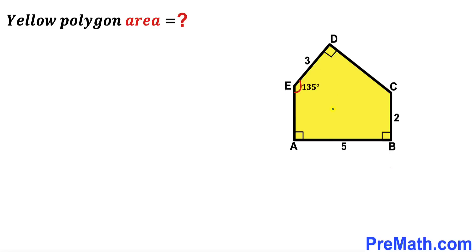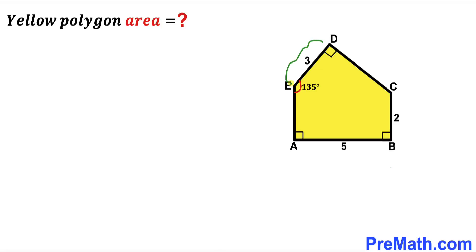Welcome to pre-math. In this video we have got this yellow irregular polygon ABCDE, as you can see in this diagram, such that its side length AB is 5 units, its side length BC is 2 units, its side length DE is 3 units. Moreover, angle AED is 135 degrees whereas all the other angles are 90 degrees each. Our task is to calculate the area of this yellow shaded polygon ABCDE.